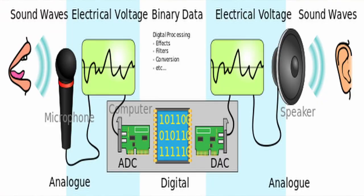So we can use the data in the computer as input or output device. When we input the data from the computer and convert this data, we can convert the analog signal to digital. This is the digital conversion.